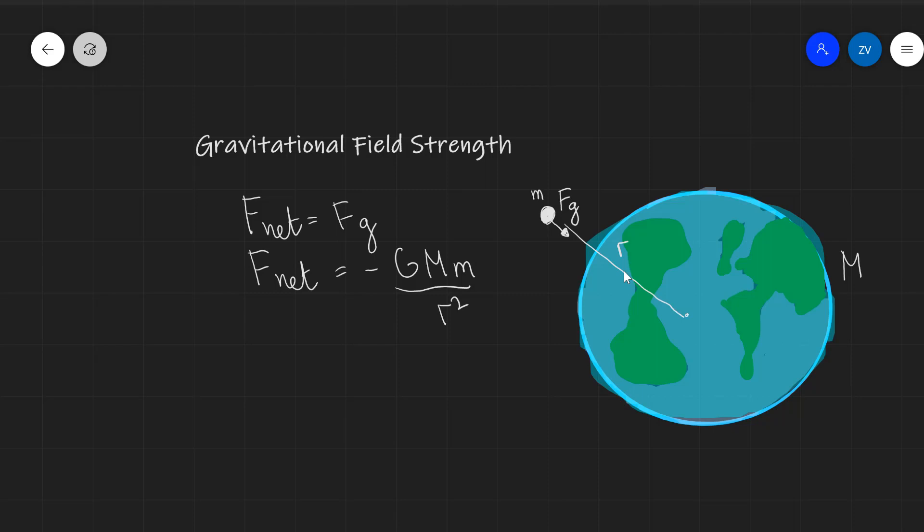Now, the net force by Newton's second law will be equal to the mass times the acceleration. This will be equal to minus GMm over R squared. Now, notice that what we can do is cancel out the two masses. So let's do that. We can cancel out the two masses.